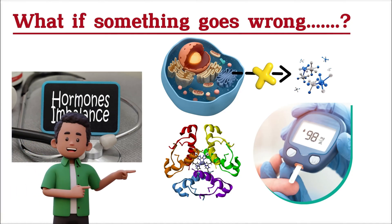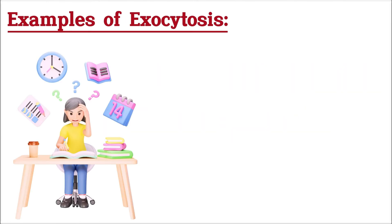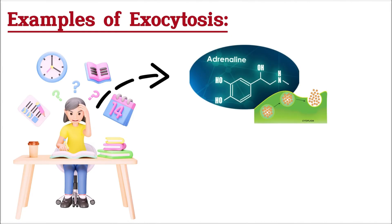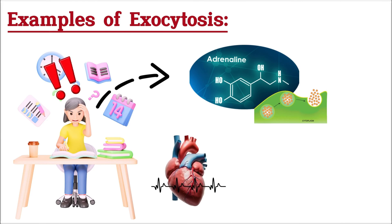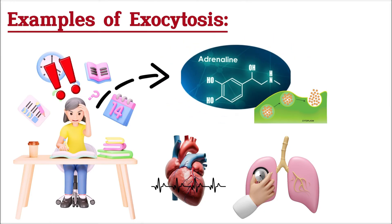Let's bring it back to how exocytosis is working in your body right now. When you're feeling stressed, your body releases adrenaline through regulated exocytosis — it's like an urgent alert system that gets the message to your body to react quickly. Your heart rate increases, your breathing becomes faster. This whole process is triggered by the release of specific molecules, thanks to exocytosis.